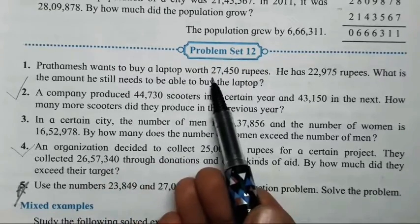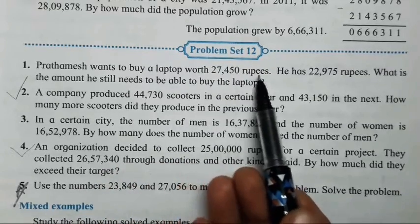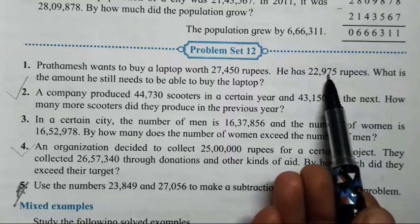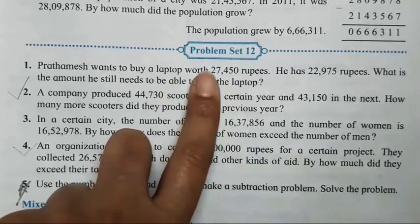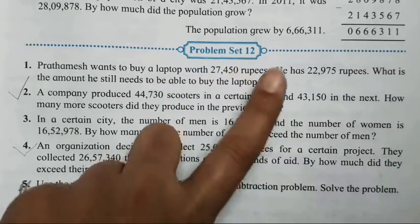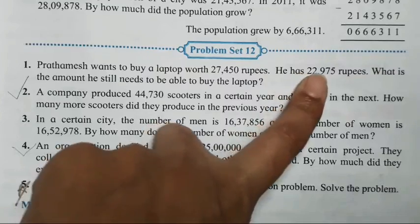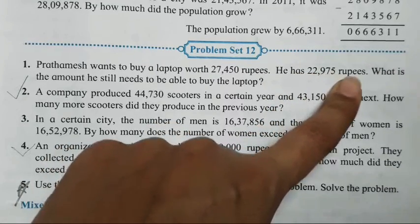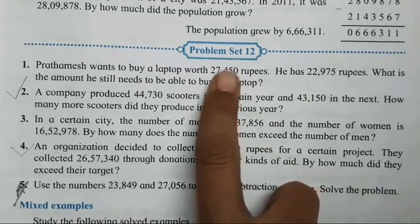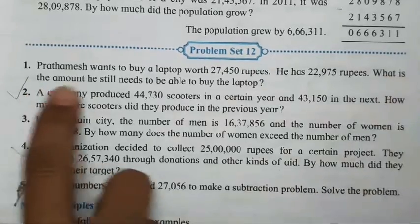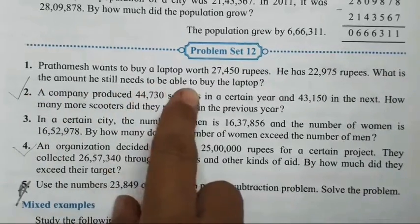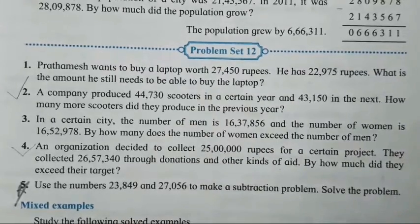Prathamesh wants to buy a laptop worth rupees 27,450. He has rupees 22,975. The laptop cost is 27,450 rupees, but he has 22,975 rupees, which is less compared to the cost of the laptop. So what we have to find is: what is the amount he still needs to be able to buy the laptop?